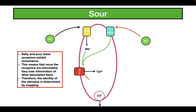Both salty and sour taste receptors exhibit a property called univariance — once stimulated, they lose information about what stimulated them, because both release the same neurotransmitter and share similar signaling pathways. Therefore, the identity of the stimulus is determined by mapping: sour taste receptor cells are innervated by different neurons and mapped differently than salty neurons, so the brain knows which signal it is receiving.